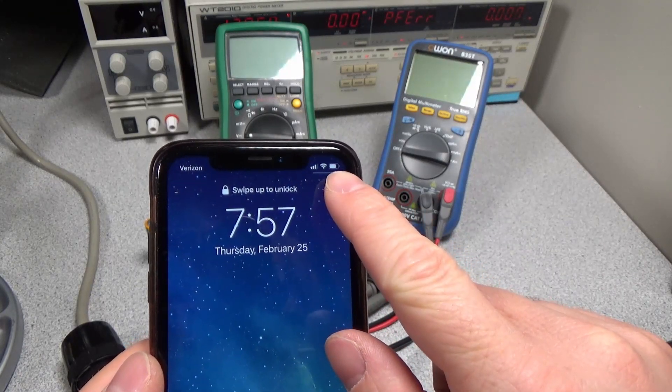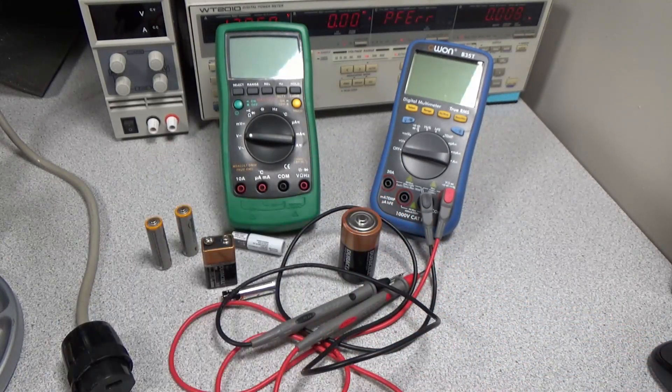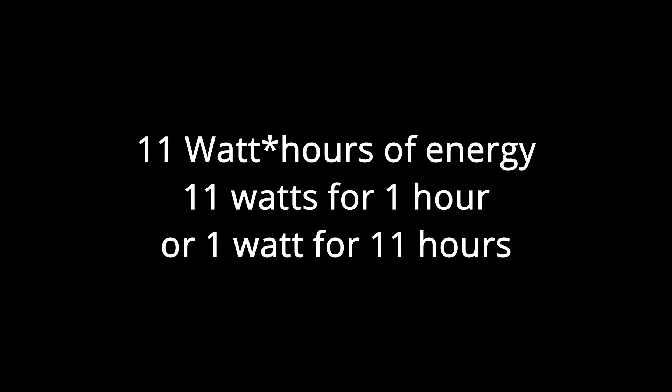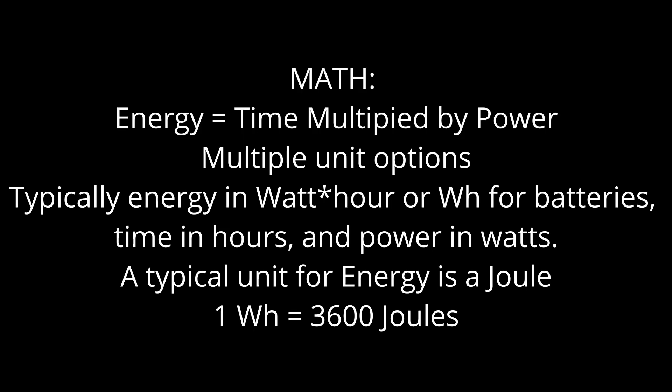This phone has a 3000 milliamp hour or 11 watt hour of capacity. So it can deliver 11 watts for 1 hour or 1 watt for 11 hours or any combination where the power multiplied by time equals 11.